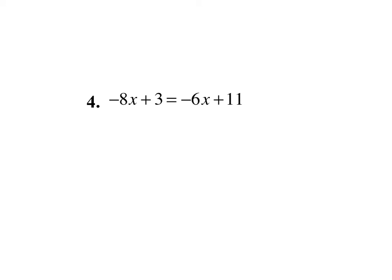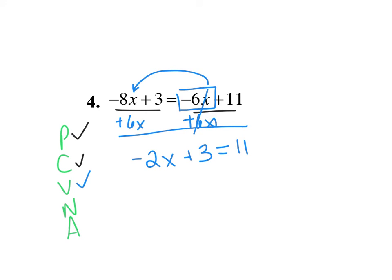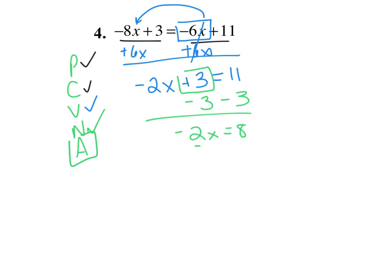Now let's do this one together. PCVNA. Do I have parentheses? Nope. Can I combine anything? Can't combine a negative 8x and a 3, and can't combine a negative 6x and an 11. Are all my variables on the left-hand side? No — I have a negative 6x on the right-hand side. To get rid of that negative 6x, I add 6x to both sides. Cancel. Negative 8x plus 6x is negative 2x, plus 3 equals 11. I subtract 3 from both sides, getting negative 2x equals 8. I divide by negative 2, so x equals negative 4. That's your final answer.